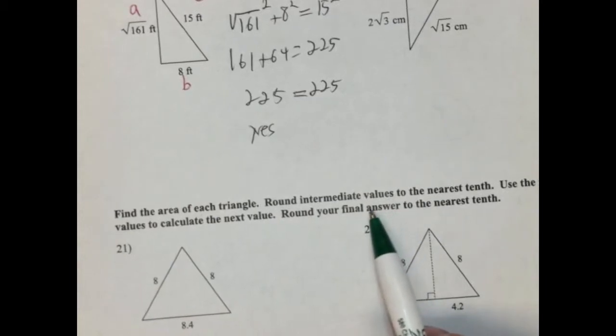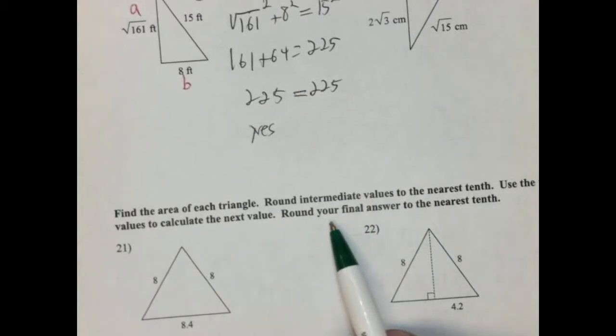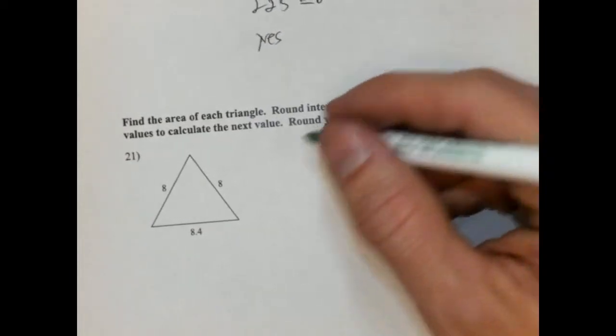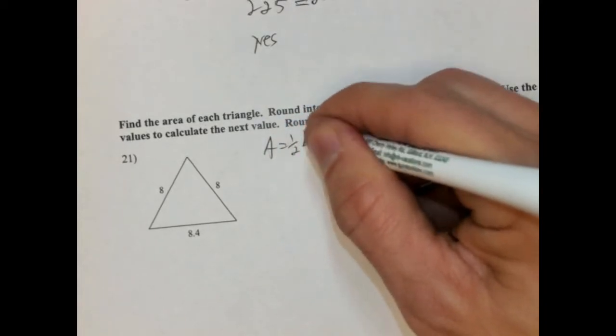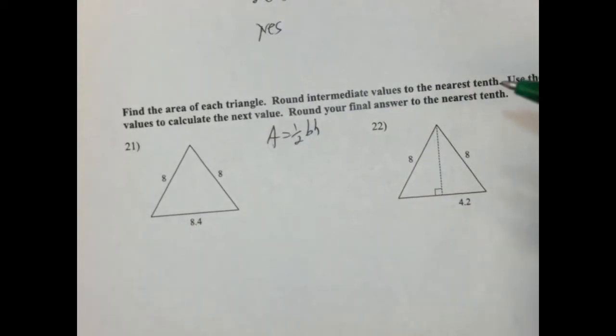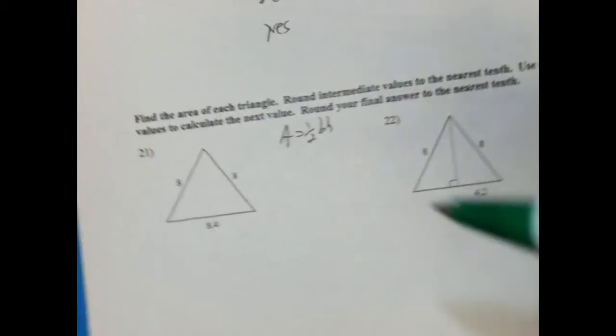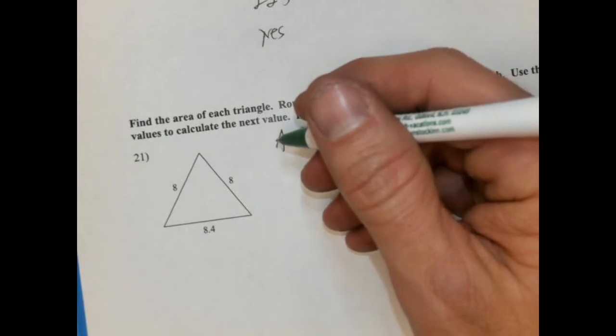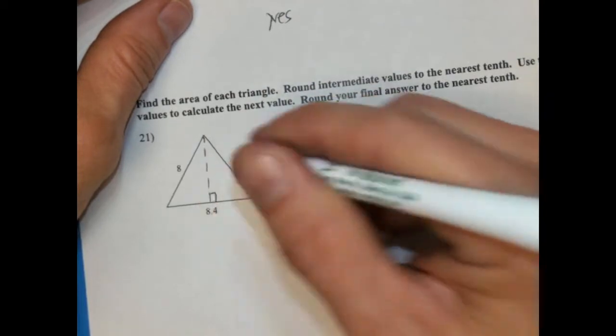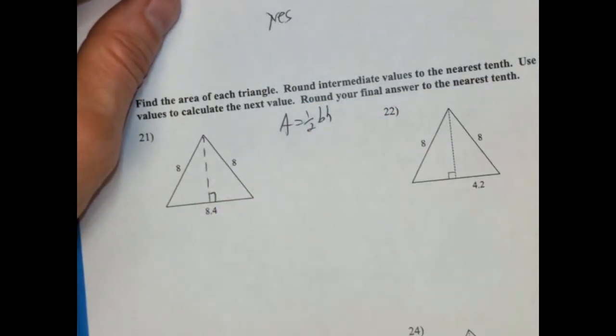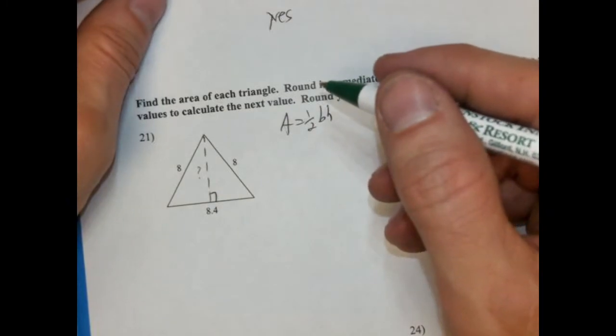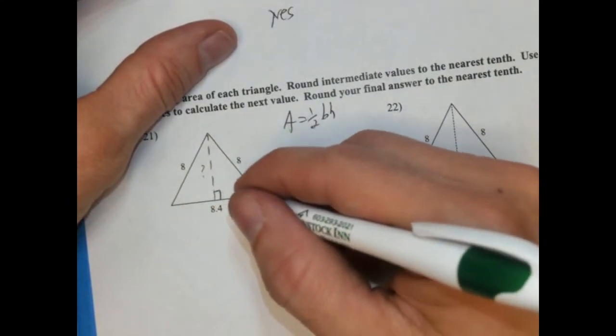All right. These last two. Find the area of each triangle. Round intermediate values to the nearest tenth. Use your rounded values to calculate the next value. So that's a really detailed instruction. So area is one-half base times height. So we're going to call this our base. Oh, this is an interesting one. Oh, this is a, I forgot about these. Okay. So we need to calculate the height. And we're going to use Pythagorean theorem to do that. So here we go. We're going to put that right in the middle here. So we're going to create two right triangles here. And they're actually congruent. We need to find out what this is. This is an interesting problem. I forgot these are on here.